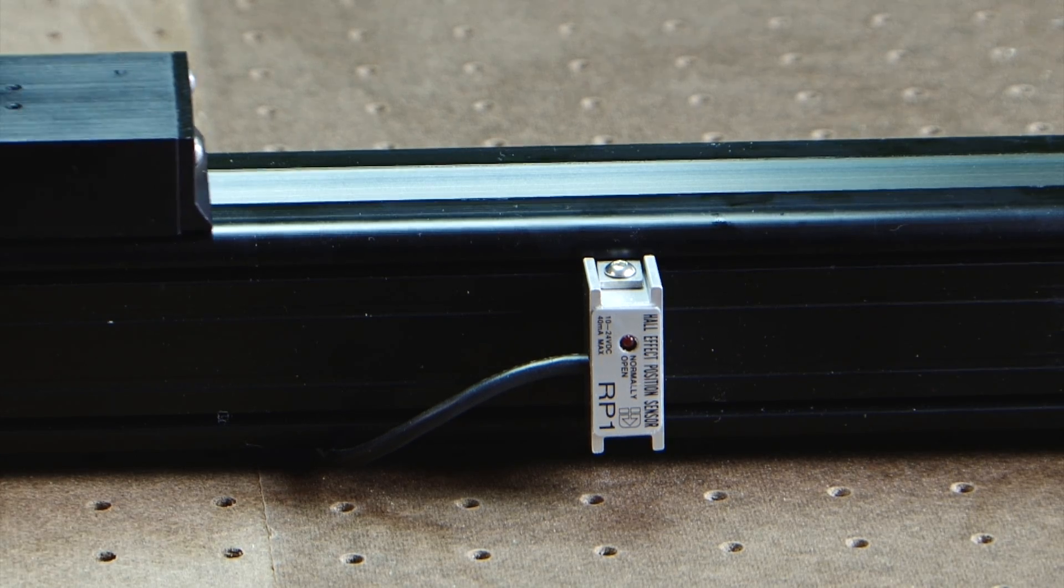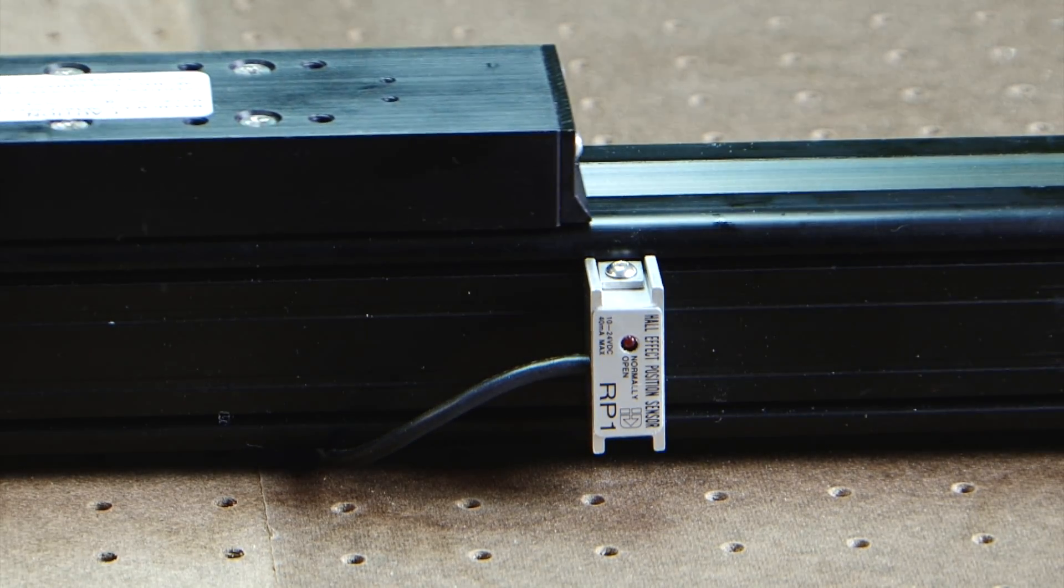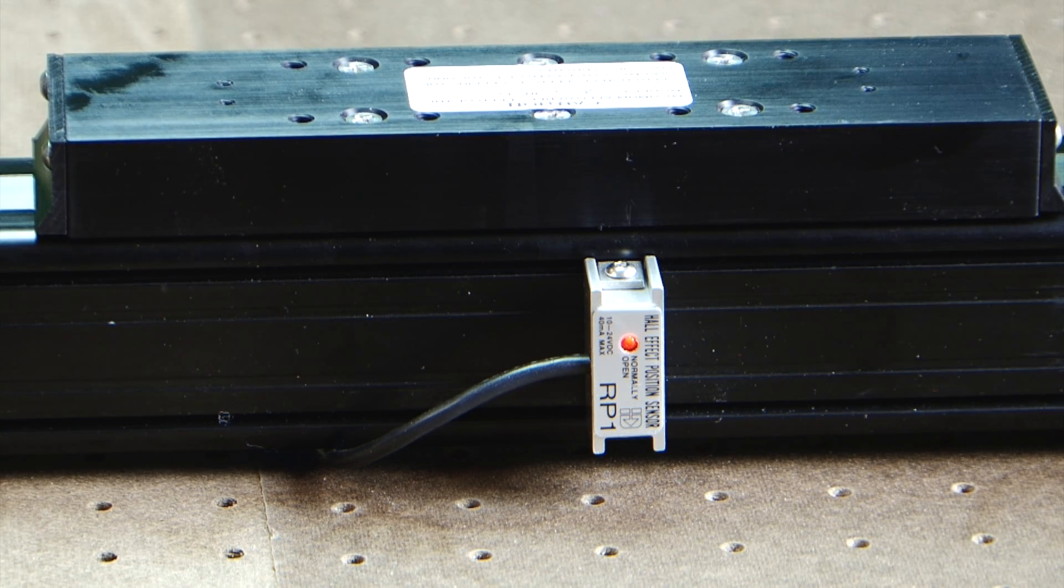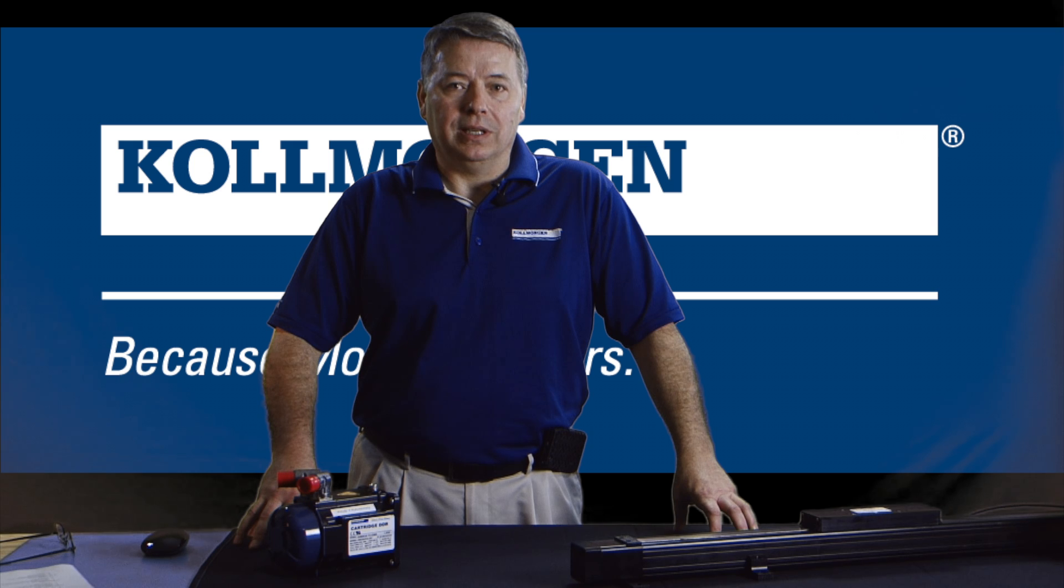For linear systems with finite travel, end of travel limits might be part of the system. It should be noted that when the home direction has been set, the system will want to approach the home switch from the same direction every time.